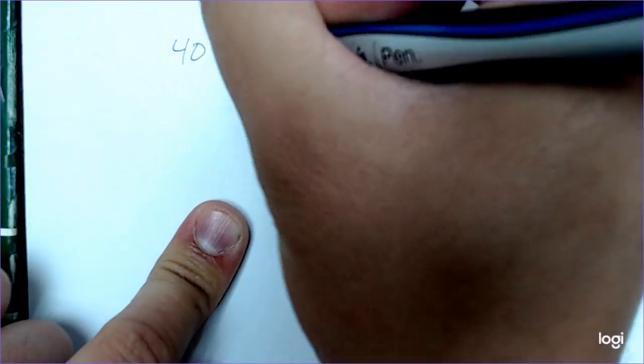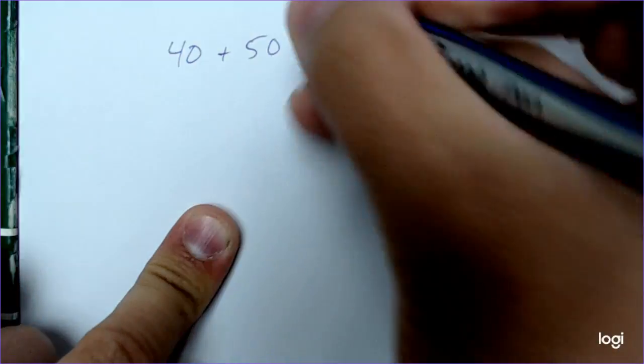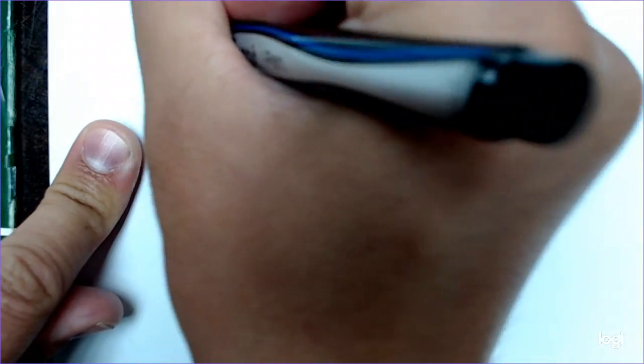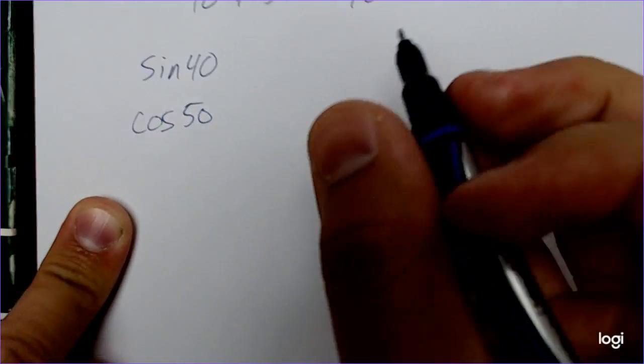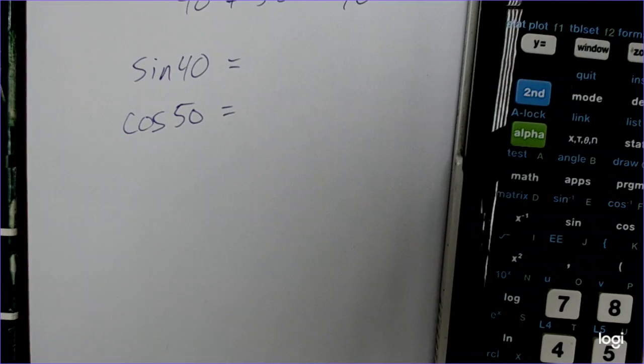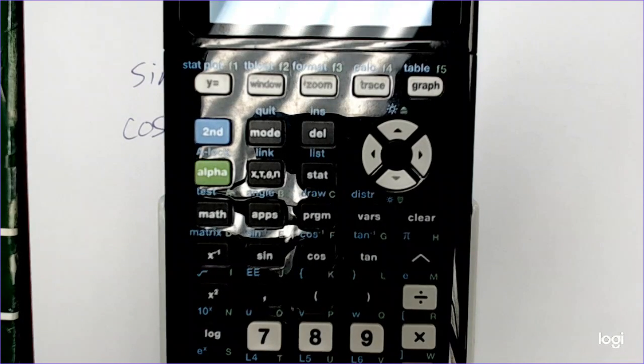Here's another interesting concept in trigonometry: functions of the other angle. This shows us that the sines and cosines of complementary angles are equal to each other. Complementary angles are angles that add up to 90 degrees — for example, 40 plus 50. If I take the sine of 40 and compare it to the cosine of 50, those answers will be the same. That's what they mean by the other angle — they're talking about complements.